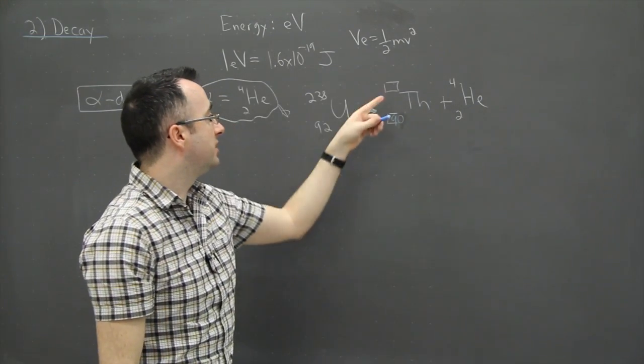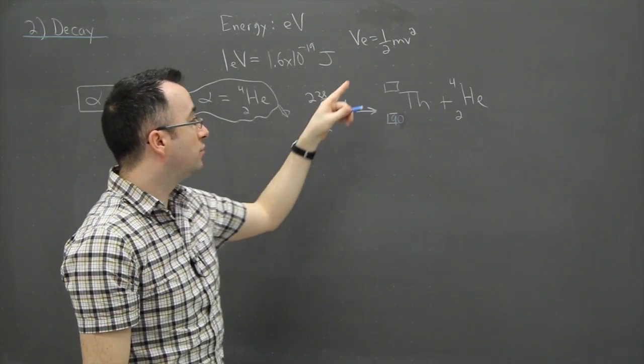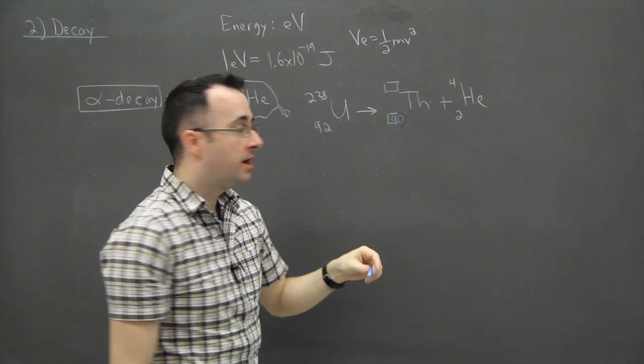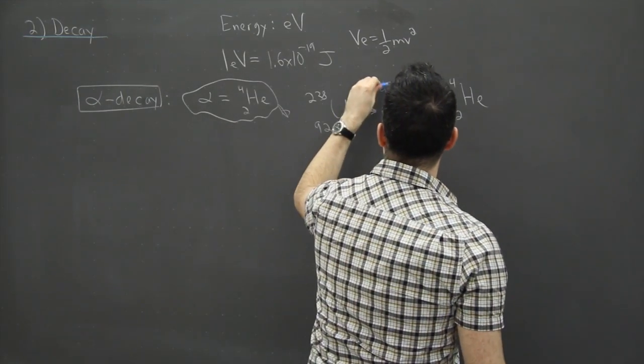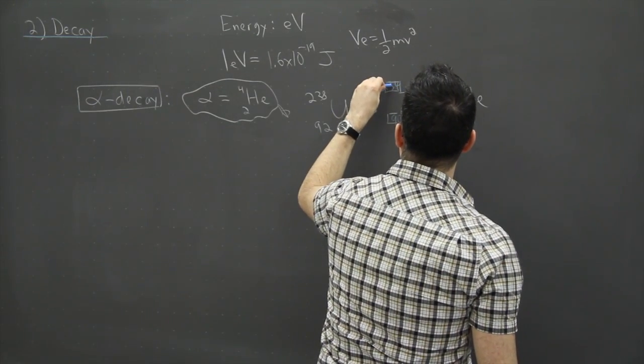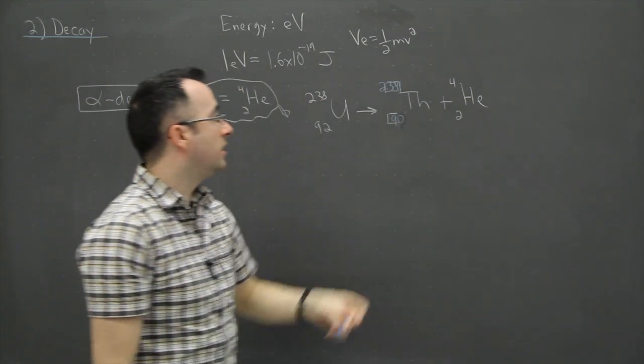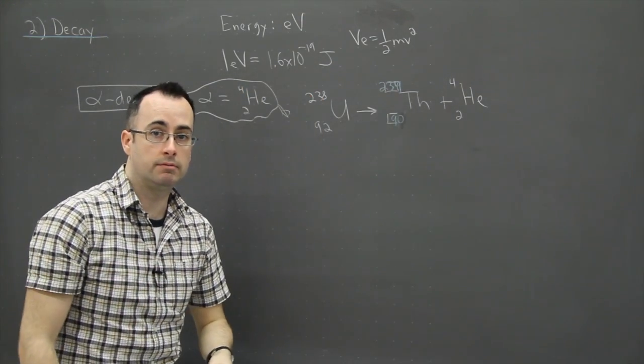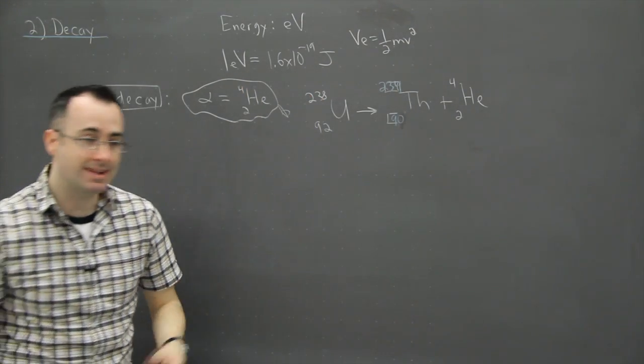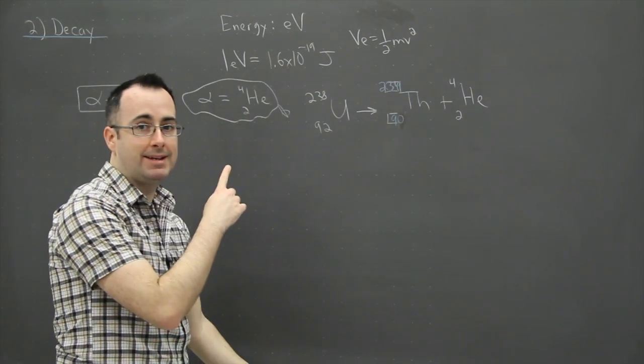And what number goes on the top here? Well, 238 equals what plus 4? That should be 234. So if we put in a 234 here on the top and a 90 on the bottom, that will get this to work. So that's an example of alpha decay.